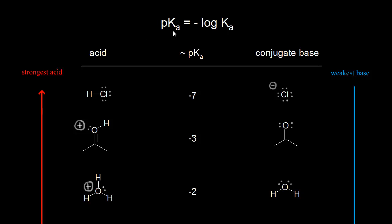Let's look at how to use a pKa table. Remember from general chemistry that pKa is equal to the negative log of the Ka. The lower the pKa value, the stronger the acid. pKa values are used a lot in organic chemistry, so it's really important to become familiar with them.